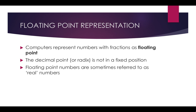The decimal point in a floating-point number is not in a fixed position, so that's why it's called floating-point — because that decimal point can move around. Floating-point numbers are sometimes referred to as real numbers, and sometimes you might see single precision or double precision floating-point numbers. Those are two different things, and we'll have a look at them a little bit later.